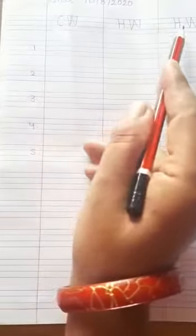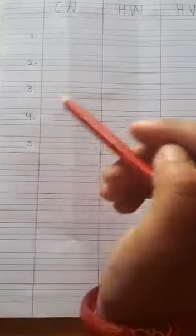Then on the first line, you write down CW and HW like this. Afterwards, you write down the numbers from 1 to 5.